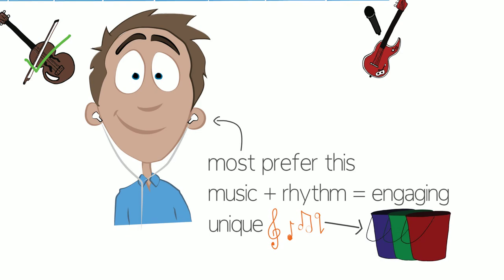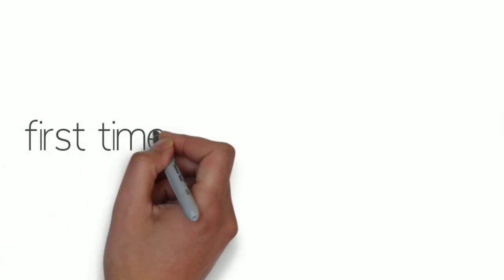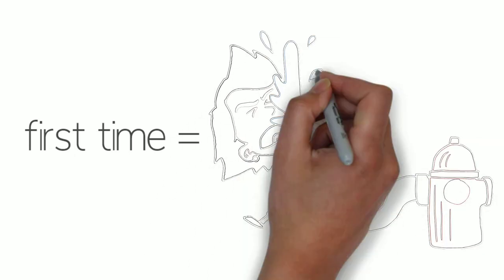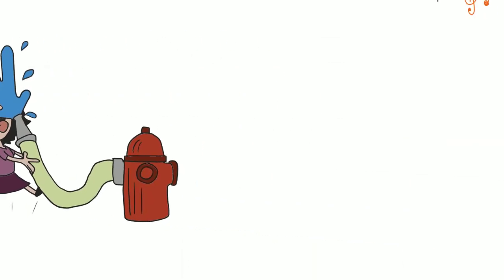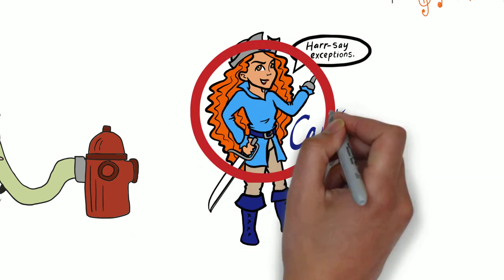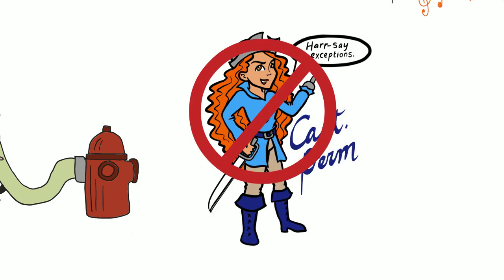Regardless of where you are on the sensory tolerance spectrum, when you go through an entire outline for the first time, it may feel a little like drinking from a fire hose. Don't worry about memorizing the mnemonics or anything else yet. Just get a general feel for the content and its organization.